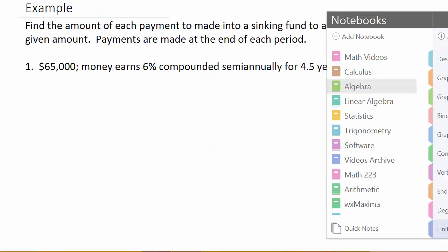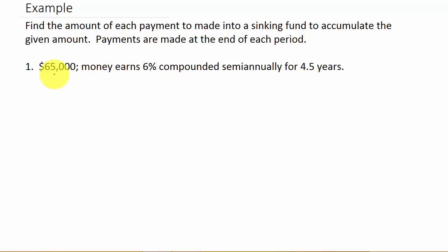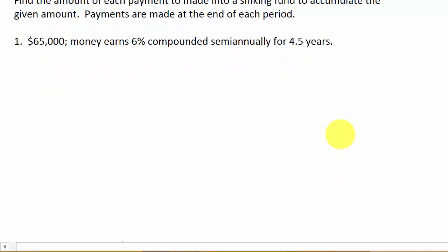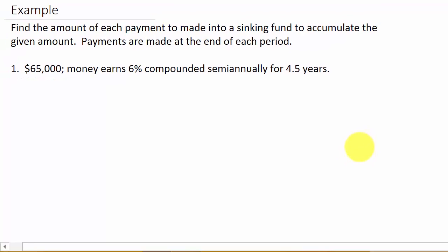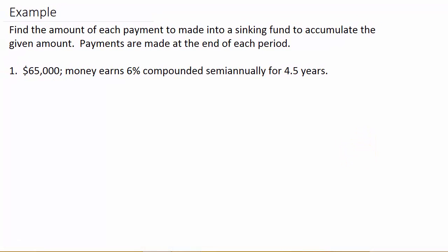So let's take a look at our examples. So here we go. We've got two examples. We've got one that just gives you all the information to plug in to the formula, and then we have a little word problem here. So I'll work both of those. So let's look at this. It says find the amount of each payment to be made into a sinking fund to accumulate the given amount. Payments are made at the end of each period. So we want a total of $65,000 in four and a half years. So in four and a half years we need $65,000. The money earns 6% compounded semiannually.